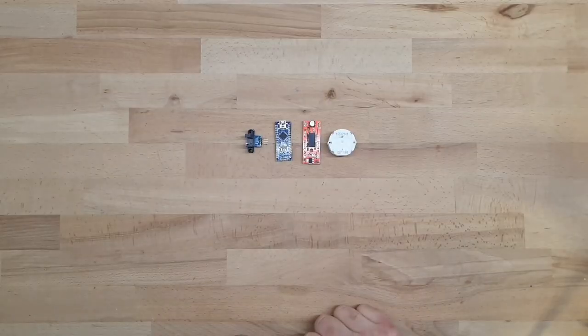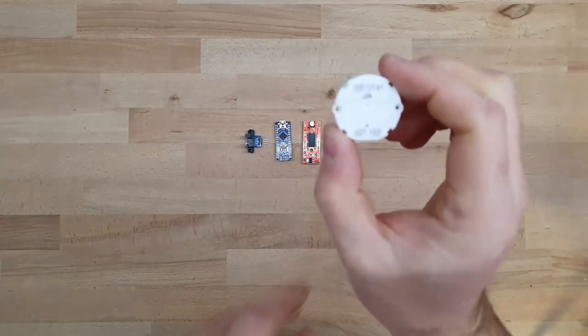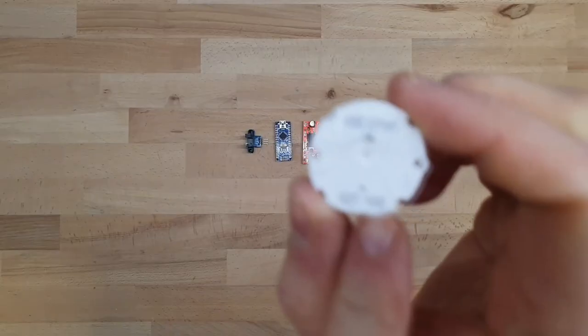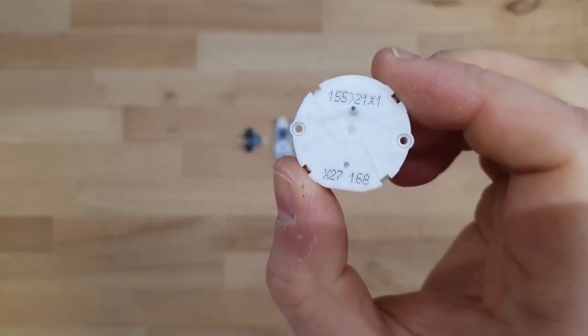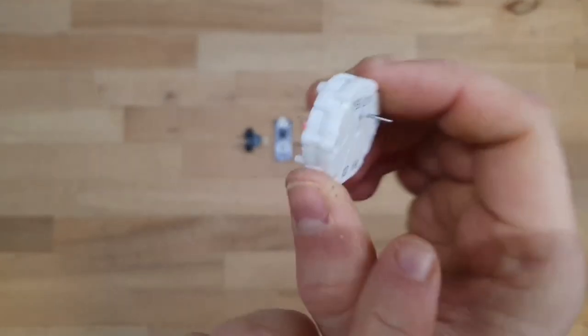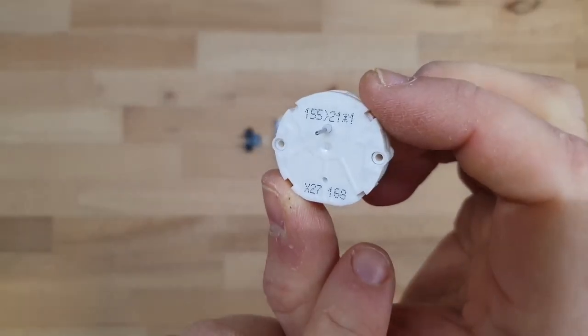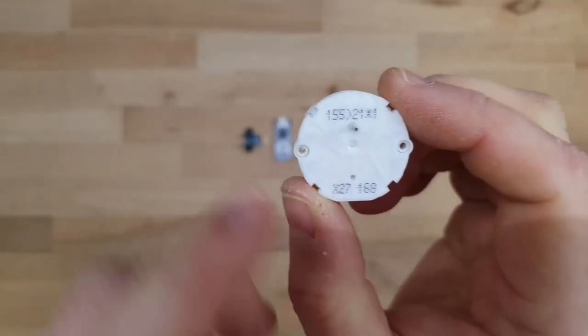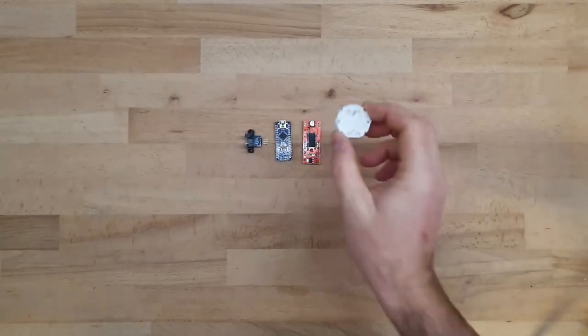So these are the electronic parts that you need to get this thing working. First one is an X27168 stepper motor. This is the small stepper motor that you'd find in car dashboards. It's very inexpensive on eBay. Links in the description.